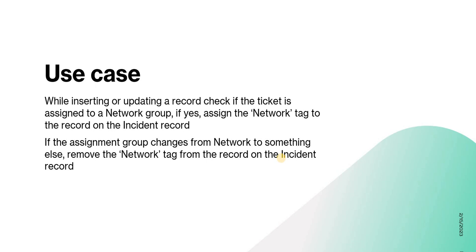After this it will be easier for the network team to actually see the incidents which are assigned to them. You can extend this functionality to the change table, the problem table, or any other custom table, and then you will get a proper view of all the tickets the network team is working on or has worked on — similar to the view I showed in my previous video where you can see all tags belonging to you and the records attached to them.